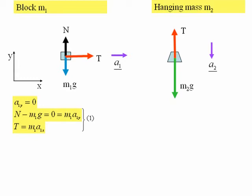N minus M1G is the resultant force on our block in the vertical direction, and because the acceleration in that direction is zero, we equate that to zero, and that is also equal to M1A1Y. In the X direction or horizontal direction the resultant force is just T, so putting that into Newton's second law gives us T is equal to M1A1X.